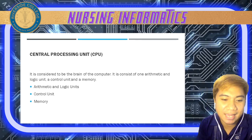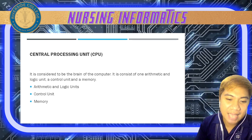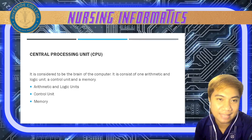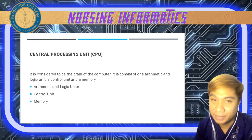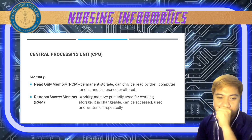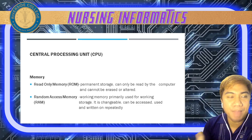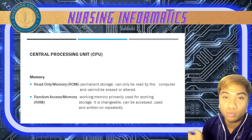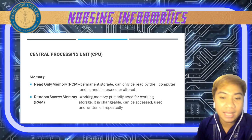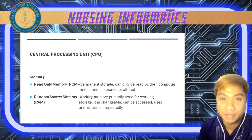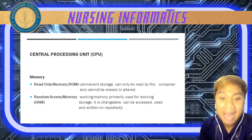Next, we have memory — it is where the computer stores all data. There are two types of memory: ROM or Read Only Memory, and RAM or Random Access Memory.